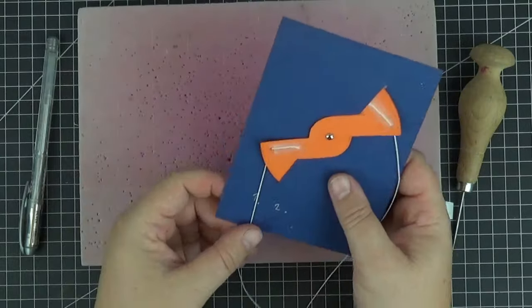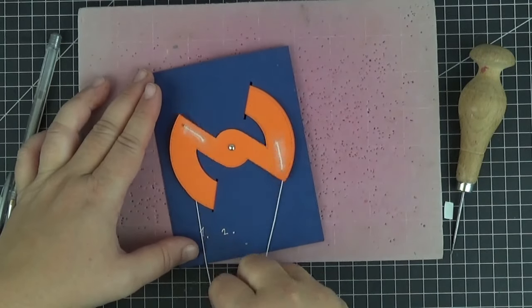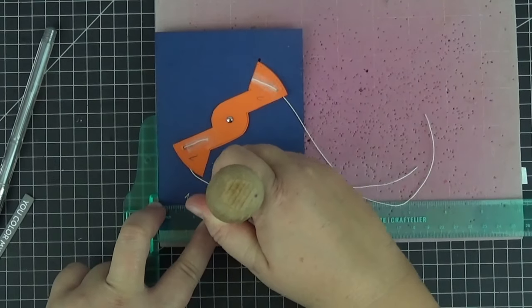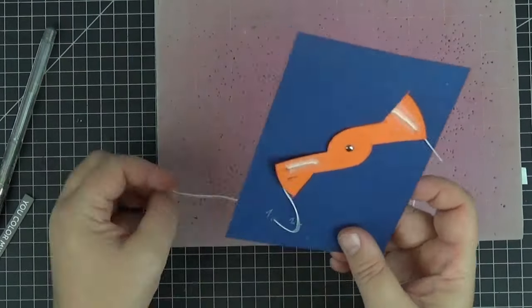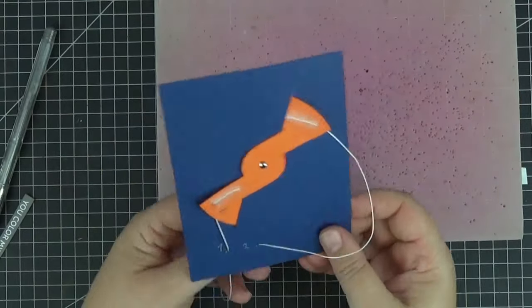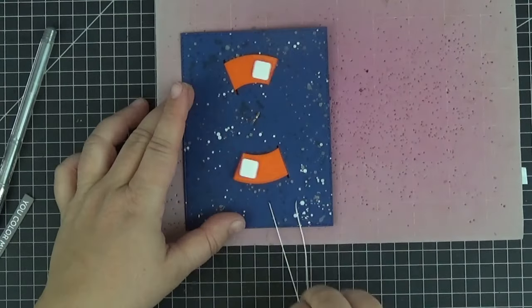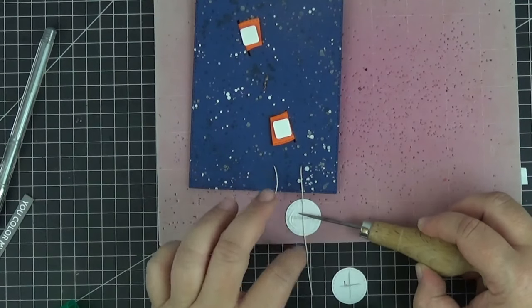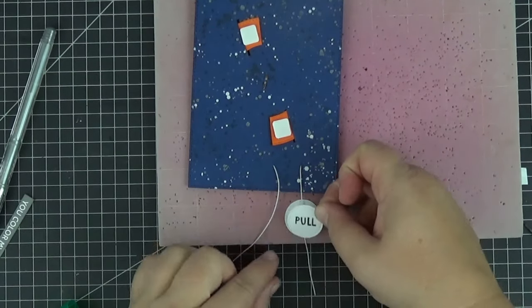I marked the two points where I'll punch holes in the panel and they are one inch and one and three quarters of an inch from the right edge and three quarters of an inch from the lower edge. After pulling the strings through to the front we can add the little one inch circles with our prompt. I used liquid glue for this.